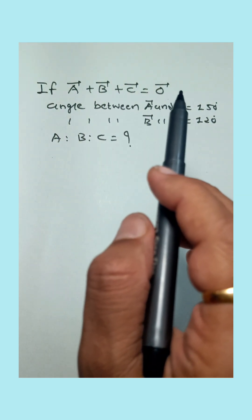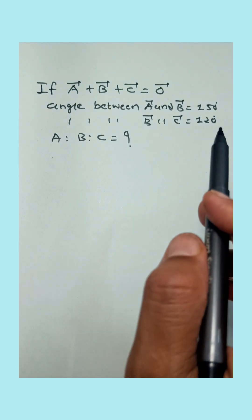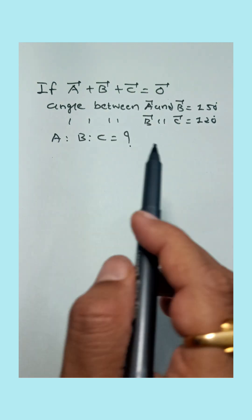If A vector plus B vector plus C vector is 0, angle between A and B is 150°, between B and C is 120°, then find out ratio of ABC.